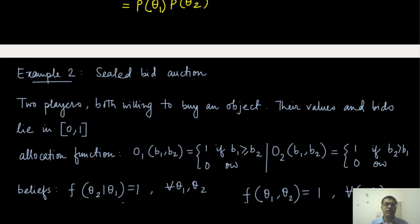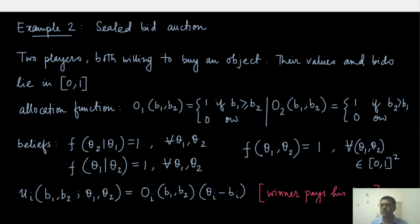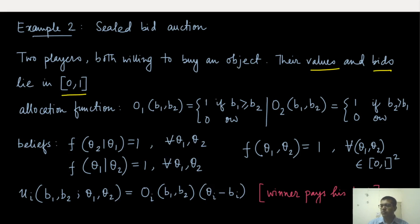The second example is that of a sealed bid auction. There are two players, both willing to buy an object, and their values — the maximum price at which they are willing to purchase this object — and the bids both live in the closed interval [0, 1]. The allocation function works in the following way: this is a standard auction mechanism. It takes the bids from both players, and if the first player's bid is at least as much as the second player's bid, ties are broken in favor of player 1.